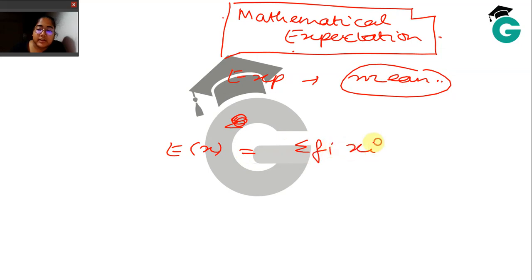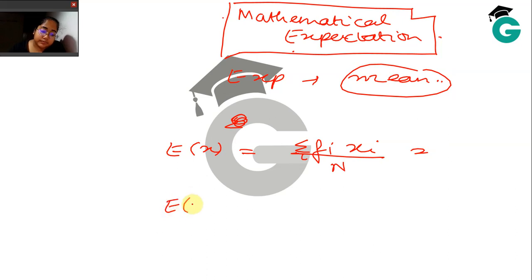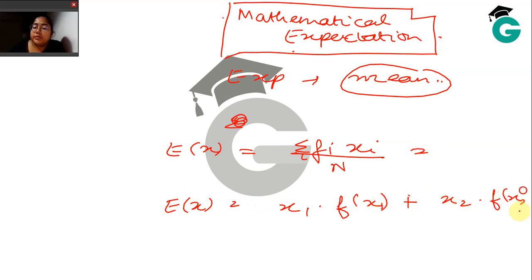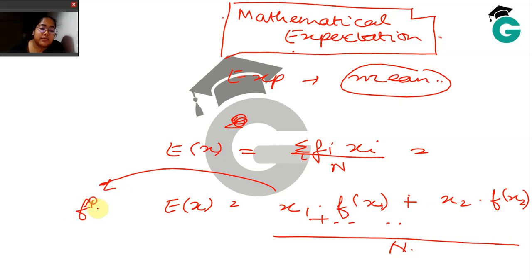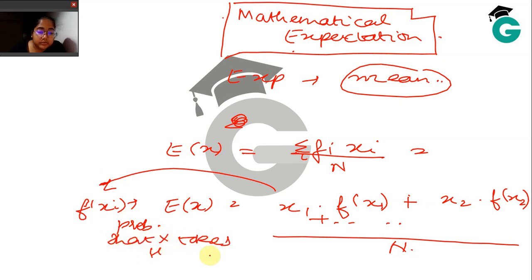you would say that it is the summation of f_i · x_i divided by n, where f_i is the frequency with which X takes the value x_i, summed over all i. This looks like x_1 · f(x_1) + x_2 · f(x_2) + ... divided by n. Essentially, f(x_i) is precisely the probability that X takes the value x_i.